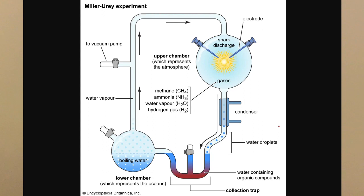There's also a condenser involved, which condenses the water vapour back down into liquid water. That water contains molecules from the chemical reactions that occurred in the upper chamber with the electrical sparks. The water then collects at the bottom in the collection trap and continues circulating — liquid water becomes gaseous water in the upper chamber, then condenses back down into liquid water again.